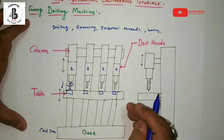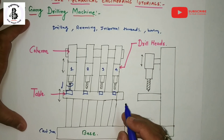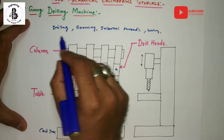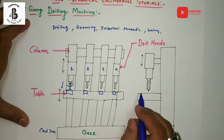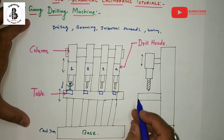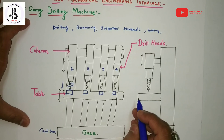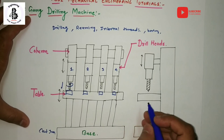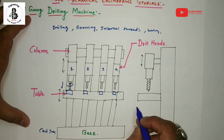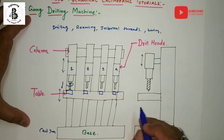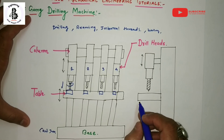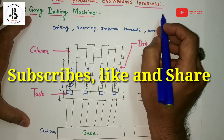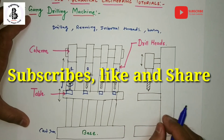The gang drilling machine is used in mass production, increasing the accuracy and productivity of the products. Please subscribe, like, and share for more mechanical engineering tutorials. Thank you very much.